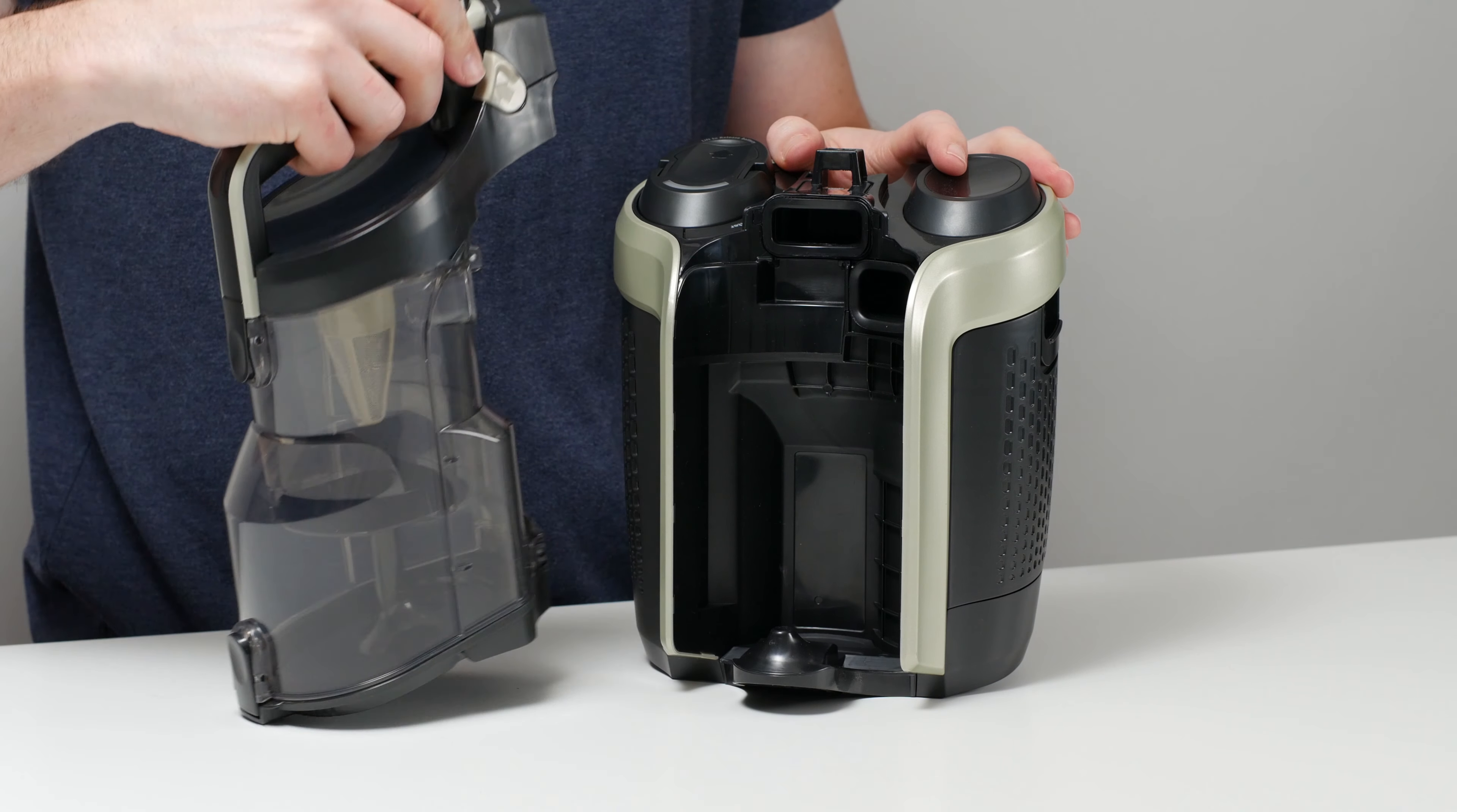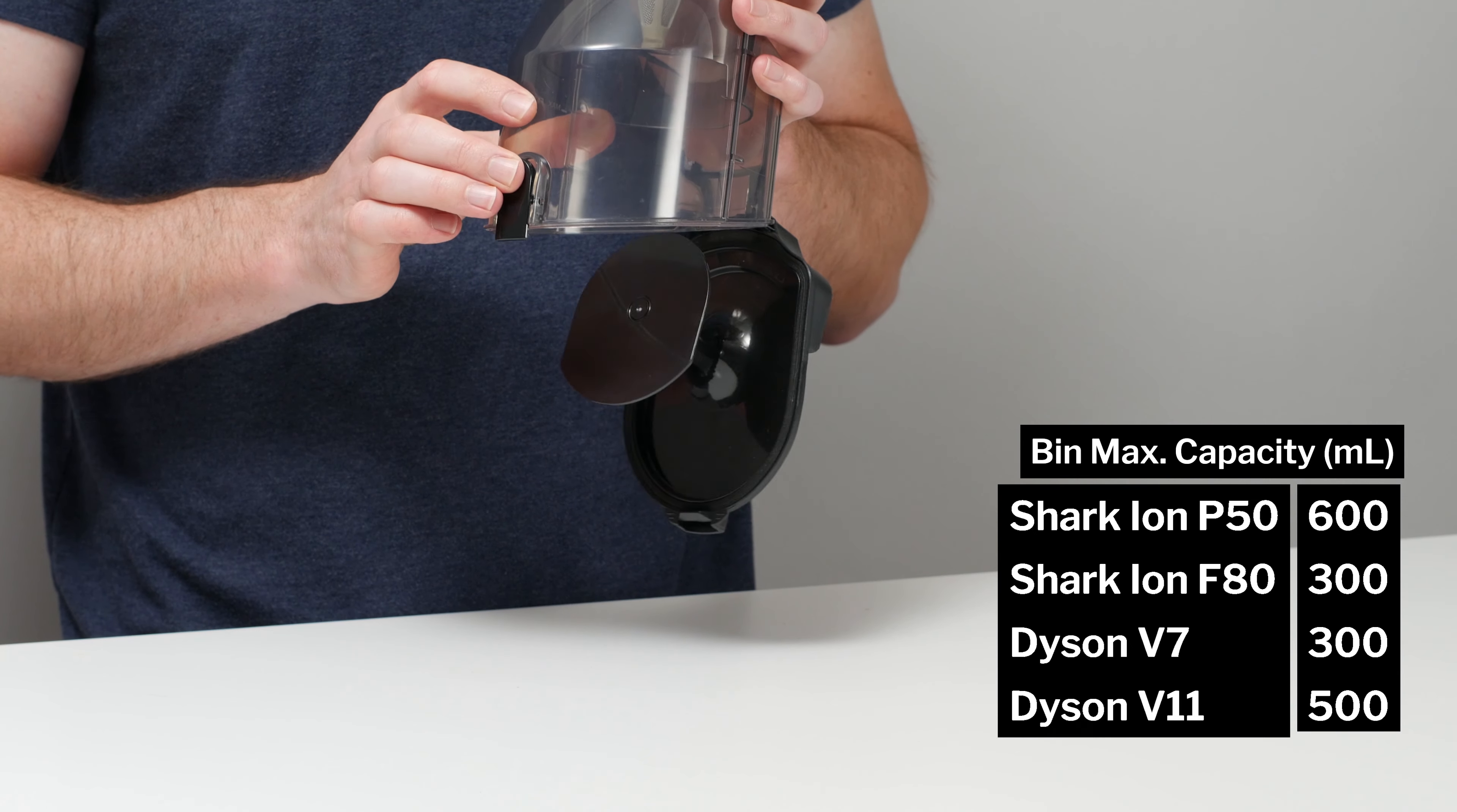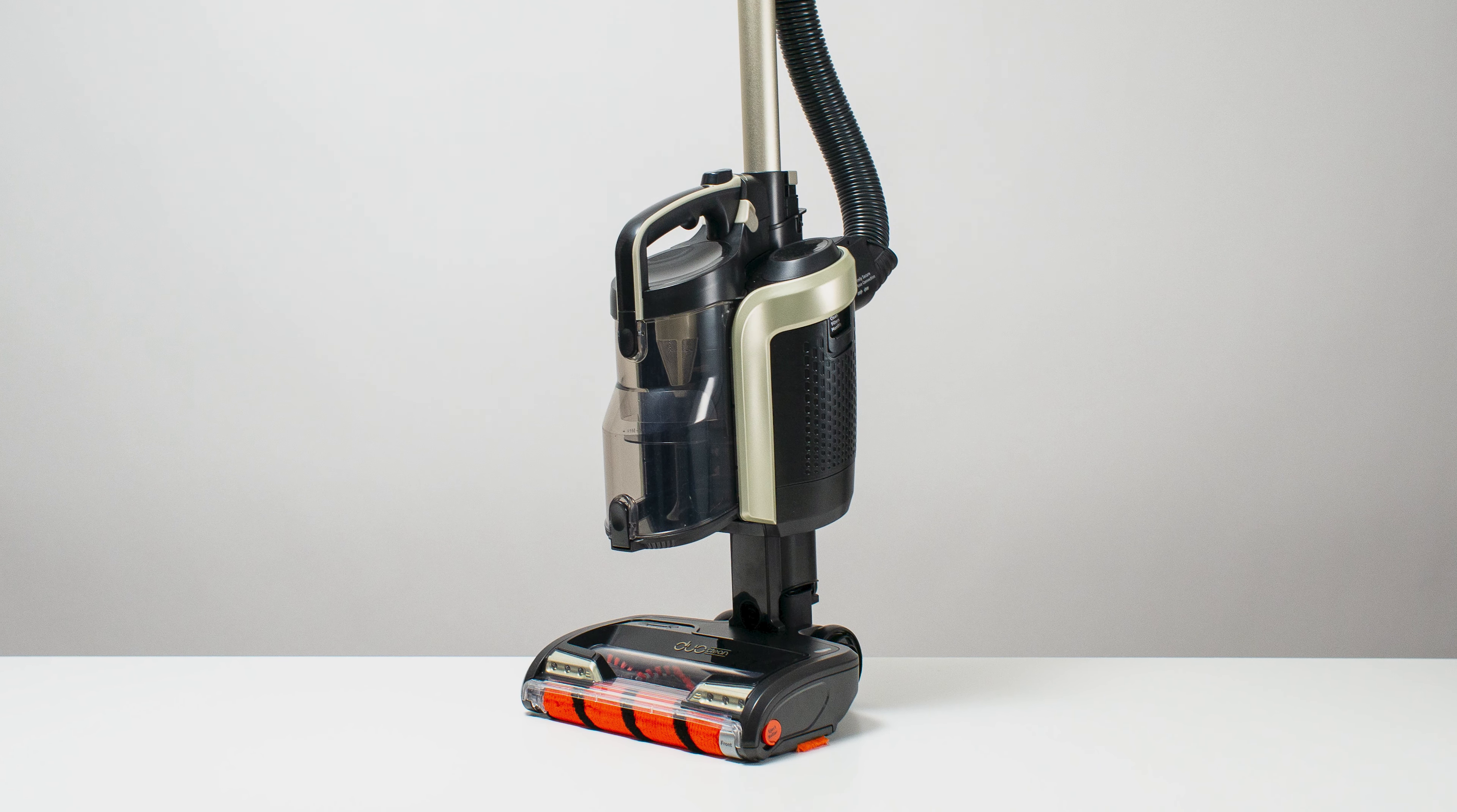One definite positive of the vacuum's lift-away feature is that the whole design does allow for a bigger dustbin. The P50 has a bin with a maximum measured capacity of 600 milliliters. Competitors tend to have much smaller bins.